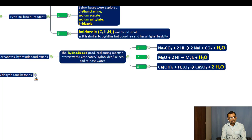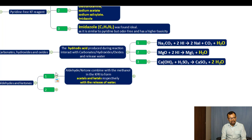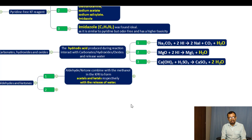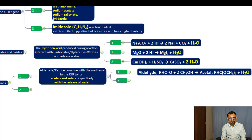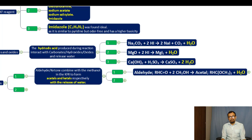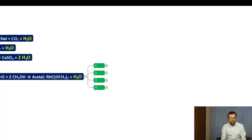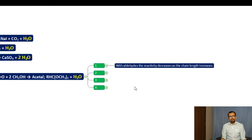The second side reaction involves aldehydes and ketones. The KF reagent is not suitable to analyze water content in aldehydes and ketones because they combine with the methanol in the KF reagent to form acetals and ketals respectively, with the release of water. The aldehydes form acetal plus water when they react with the methanol, which is present as a diluent in the KF reagent.